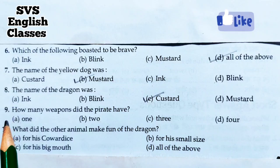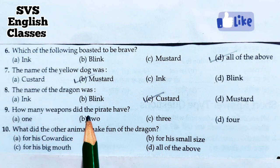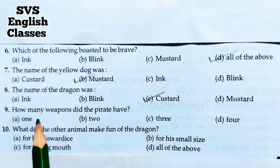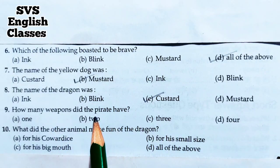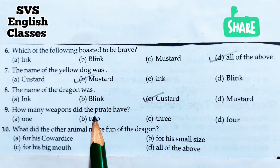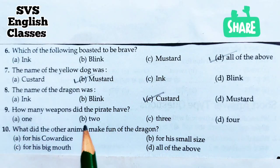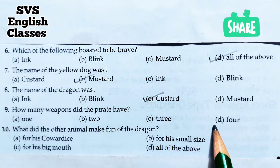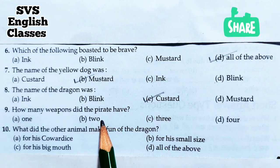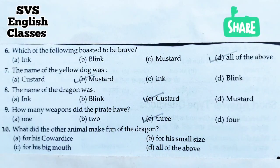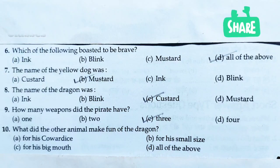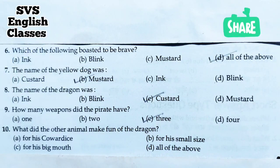Number nine: How many weapons did the pirate have? समुद्री डाकू के पास कितने हथियार थे? A. 1, B. 2, C. 3, D. 4. The pirate had three weapons - a pistol in one hand, another in the other hand, and a shining long sword held in his teeth. So option C - 3 - is correct.